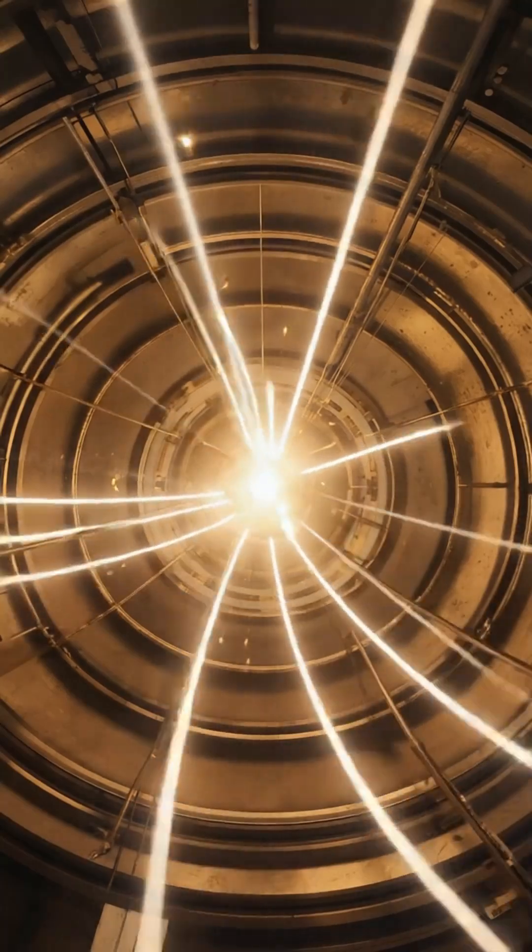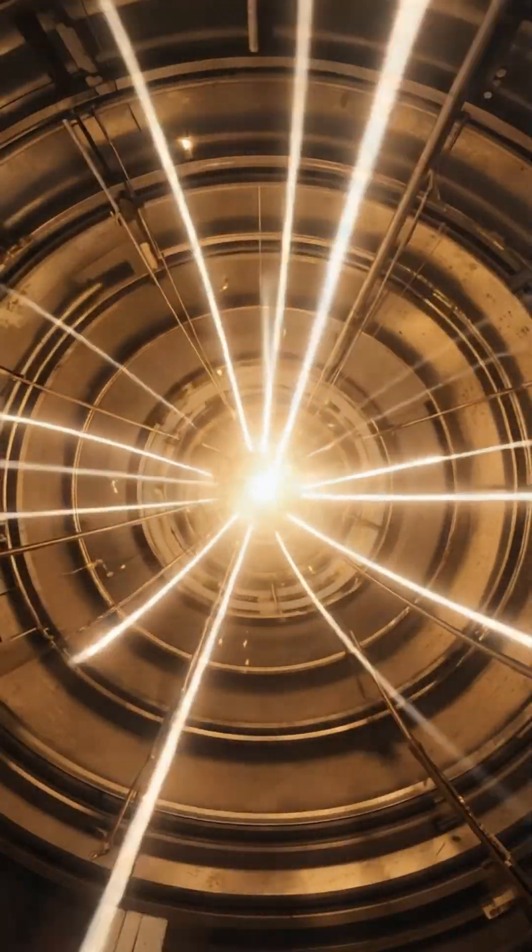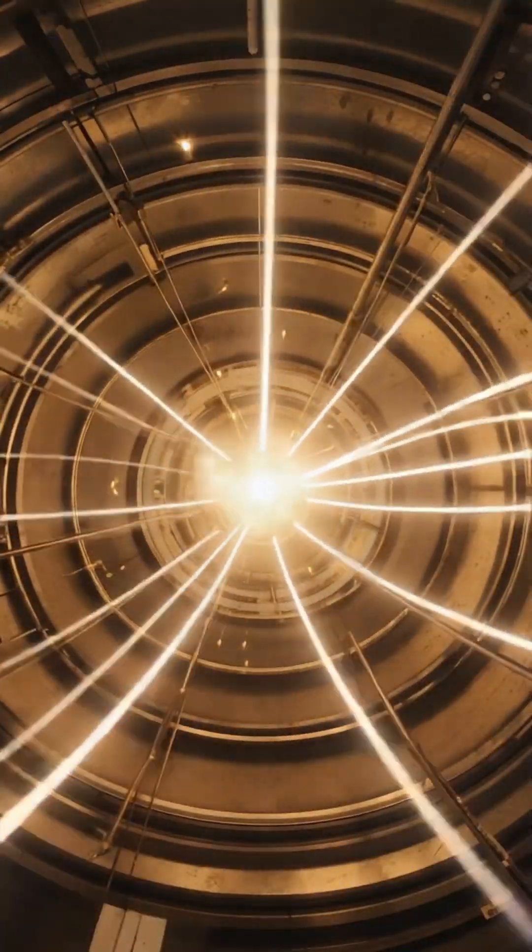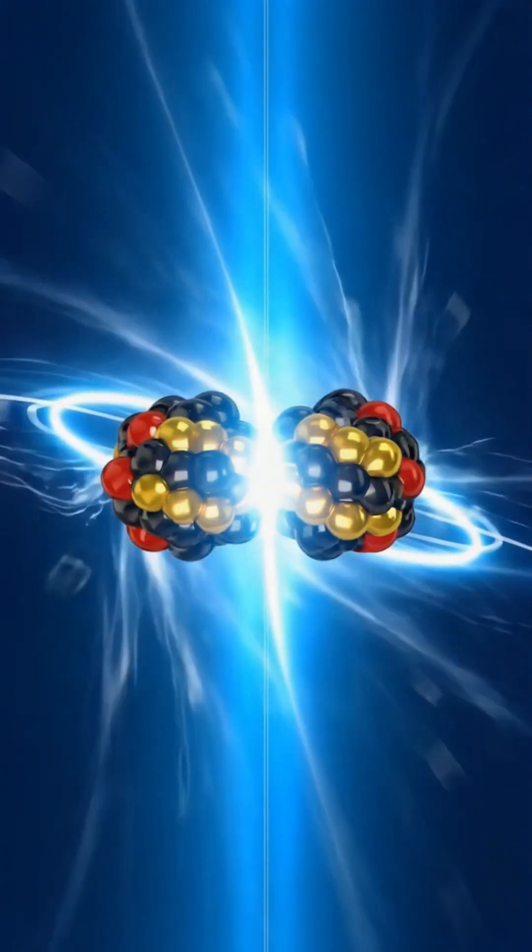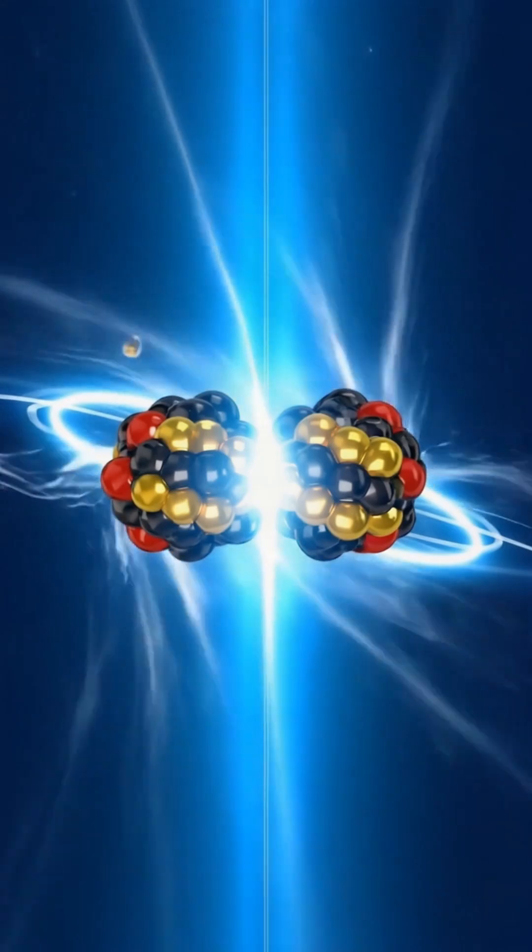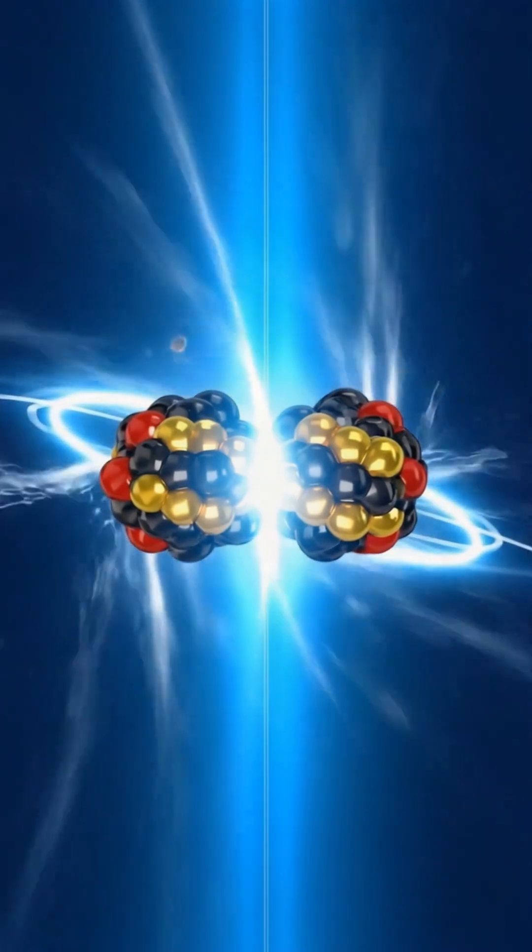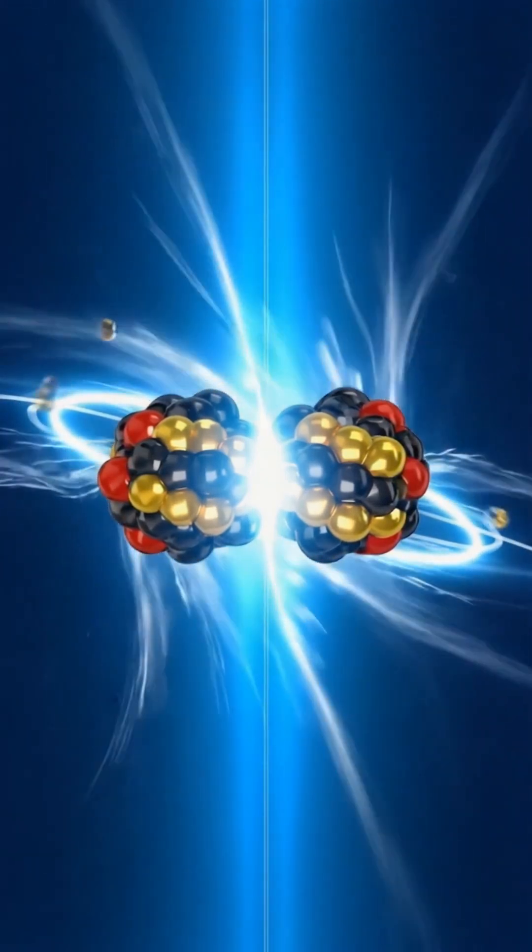As these ions passed close to each other at nearly the speed of light, their electromagnetic fields interacted, ejecting protons from the lead atoms. In certain cases, three protons were removed, resulting in the formation of gold nuclei. The process was measured and confirmed.